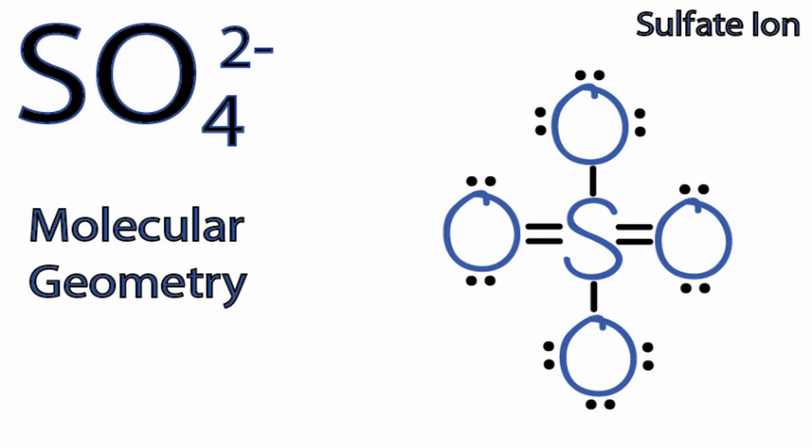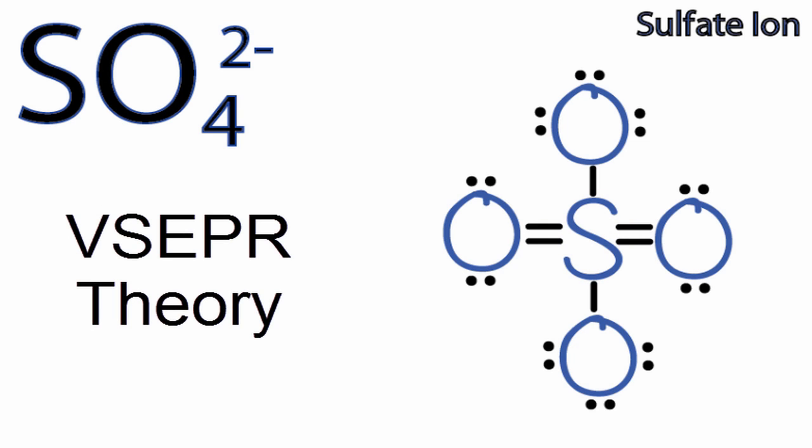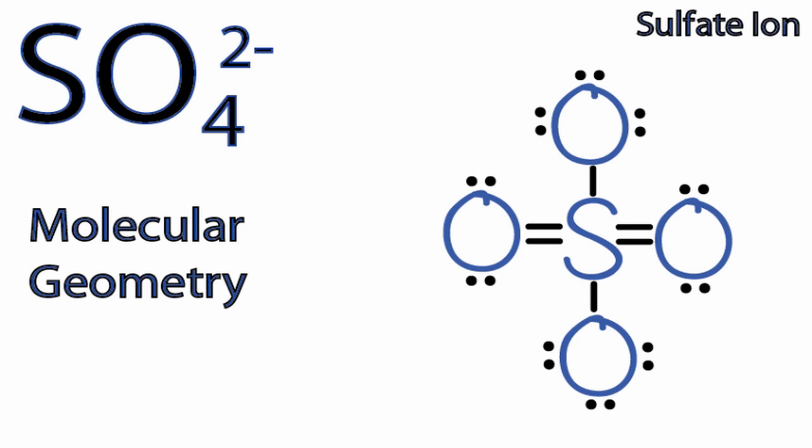Looking at the Lewis structure they do seem to be pretty spread out in accordance with valence shell electron pair repulsion theory, but remember this is two dimensions so we're going to have to look a little bit deeper in three dimensions to really figure out this molecular geometry.